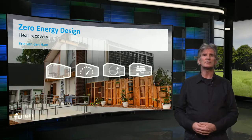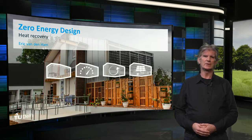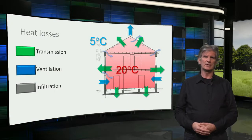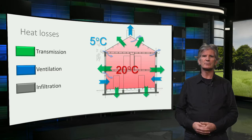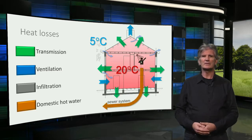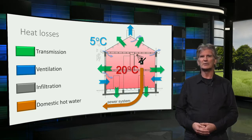In this video we will look at some examples of heat recovery in buildings. First, let's go back to the heat losses in a building. They consist of transmission losses and ventilation losses. On top of that, the heat from the domestic hot water, like the water from the shower, goes literally down the drain.